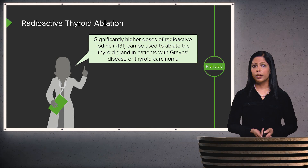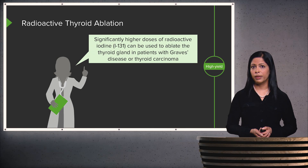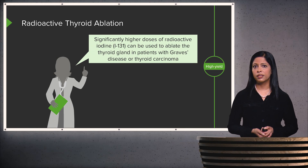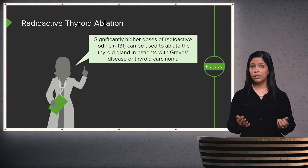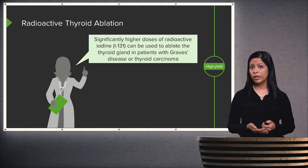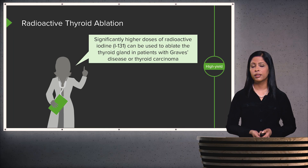Radioactive thyroid ablation can also be performed by a nuclear medicine radiologist. It requires significantly higher doses of radioactive iodine — I-131 is used, and it can ablate the gland. This is done in patients that have either Graves' disease or thyroid carcinoma.